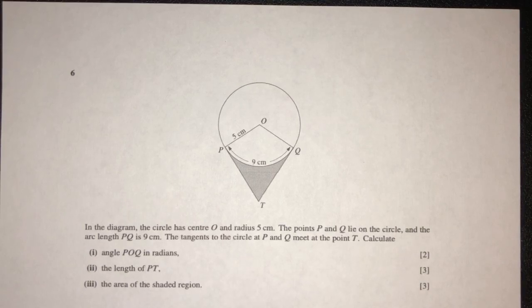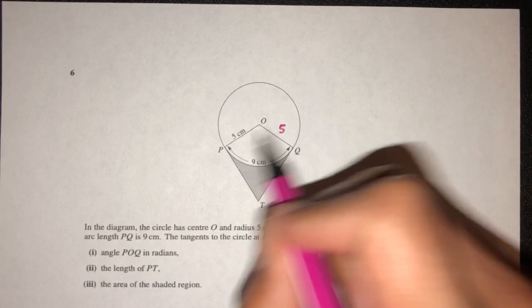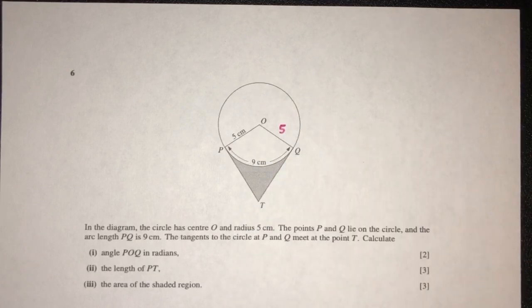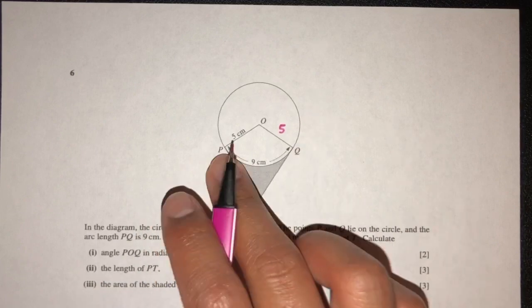Let's move on to the next question. In the diagram, the circle has center O and radius 5. The points P and Q lie on the circle, and the length of PQ is 9.